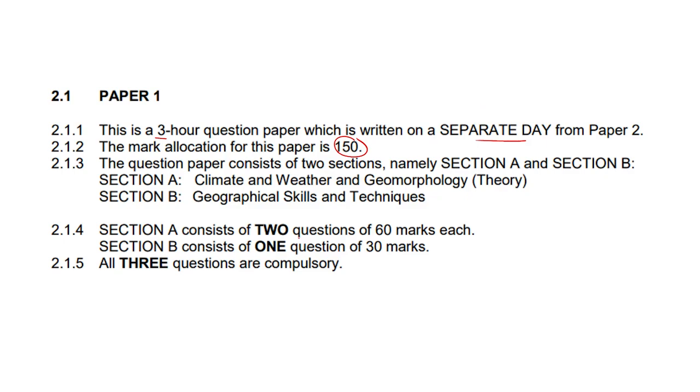And the question paper consists of two sections, namely section A, section B. So nothing really new to you guys. Climate and weather and geomorphology form part of section A. There's two questions in section A, and section B is geographical skills and techniques, basically map work. That's just big words for map work. Section A consists of two questions of 60 marks each. So 60 times two, some quick maths, that leads us to 120 marks. And section B consists of just one question, 30 marks. That is going to be your big map work question. We've got 30 marks there, and 120 plus 30 gives us that grand total of 150. All three questions are compulsory.